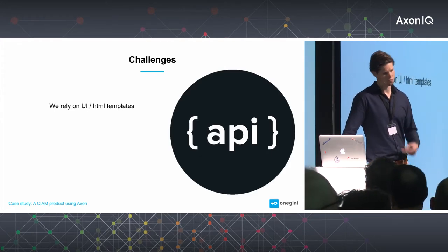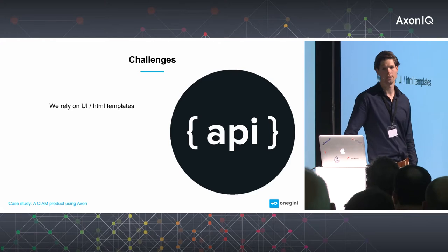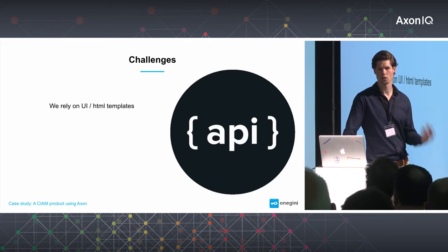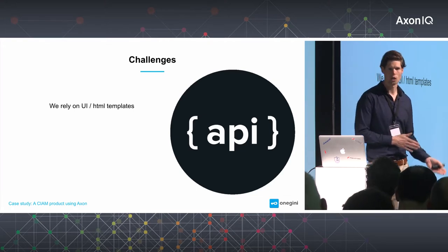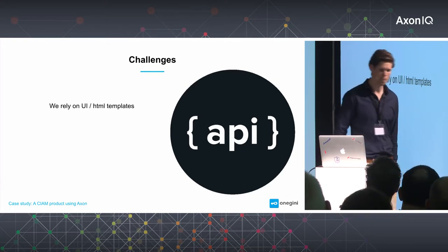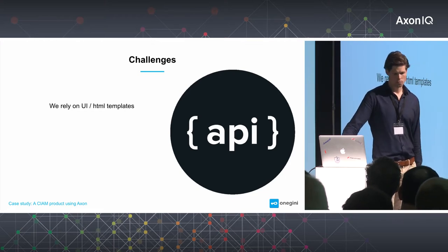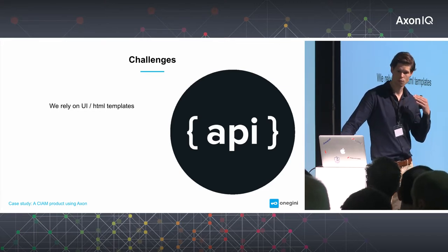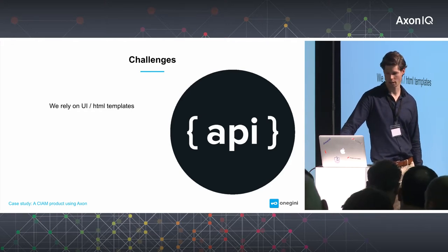Another challenge, not specifically Axon-related, is that we rely on UI and HTML templates. When a customer installs our product, they need to modify these templates to get the login screen and user registration screen they want, which is an issue because we force them to use a specific templating engine.